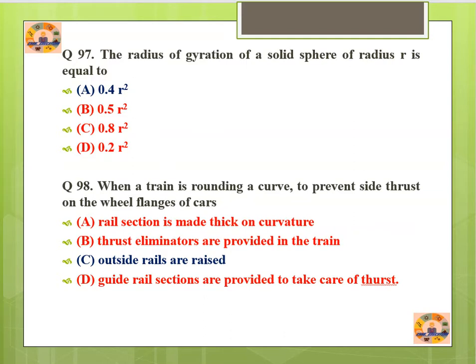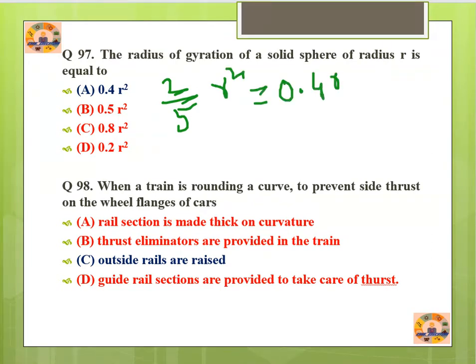Question number 97: The radius of gyration of a solid sphere of radius r equals sqrt(2/5) * r, which gives 0.4r². Question number 98: When a train is rounding a curve, to prevent side thrust on the wheel flanges, the outside rail of the curve is raised.